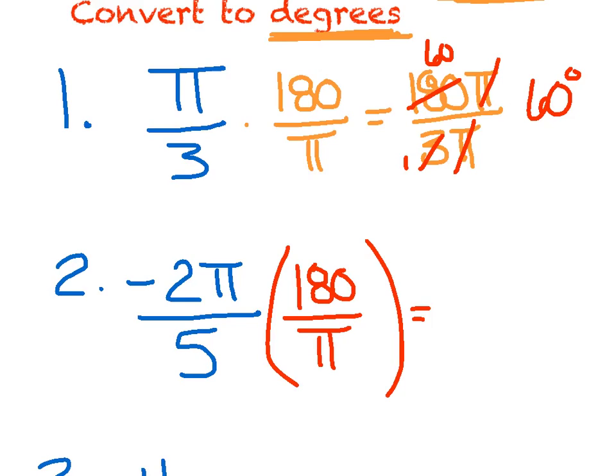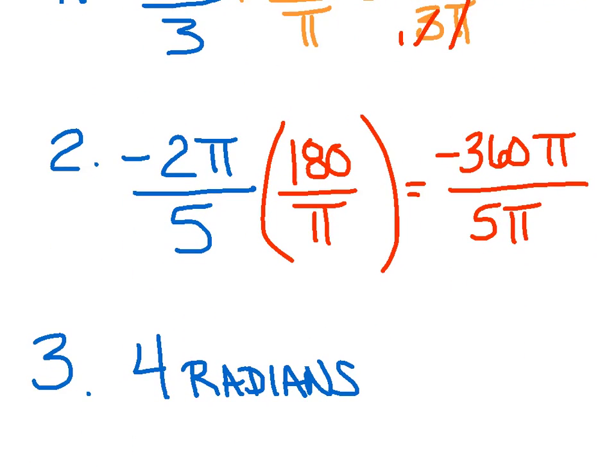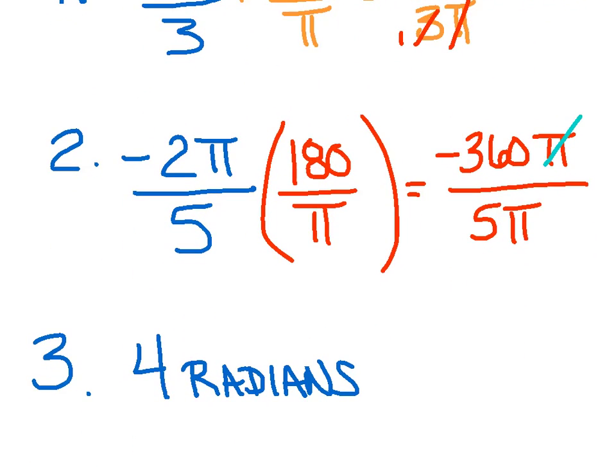Again, just multiply across the top and across the bottom. So 5 pi on the bottom. Negative 360 pi on top. I see pi's on the top and bottom. Those can cancel. 5 goes into 5 once and into 360 72 times. So I would say that's negative 72 degrees.